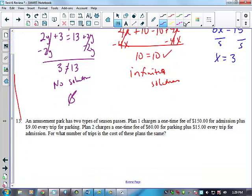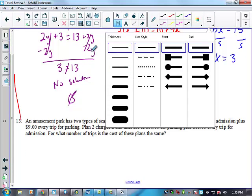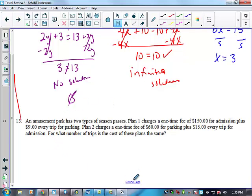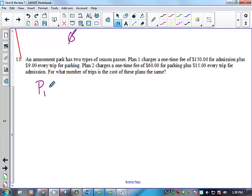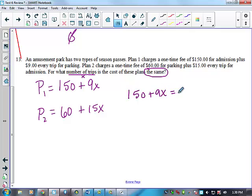Okay. 13. Questions on 13? Anybody? No? Yeah? Okay. So on 13, it says an amusement park has two types of season passes. Plan 1, what does Plan 1 charge? $150 one time plus 9X because it's 9 for each trip. Plan 2, $60 for their one time fee plus 15X because it's 15 for each trip. For what number of trips, number of trips here, is that P or X? Is the cost of these plans the same? What does the same mean? Equal. So I'm going to say 150 plus 9X equals 60 plus 15X. And I'm going to let you solve it from there.